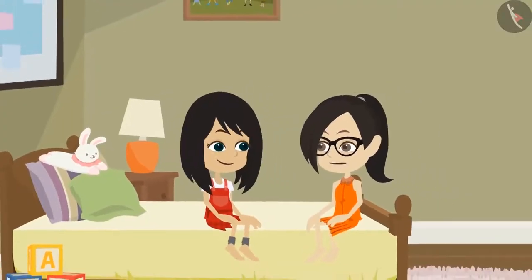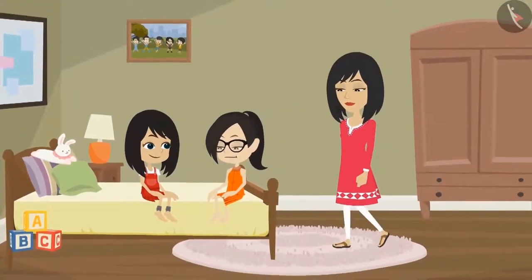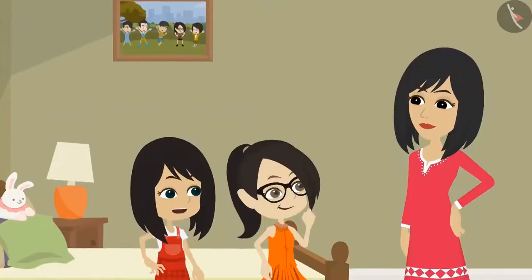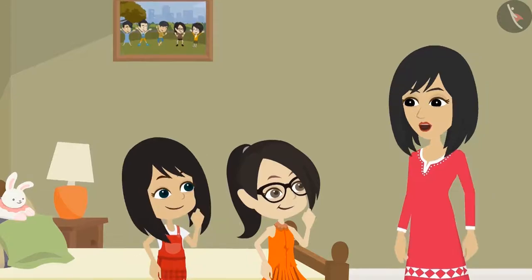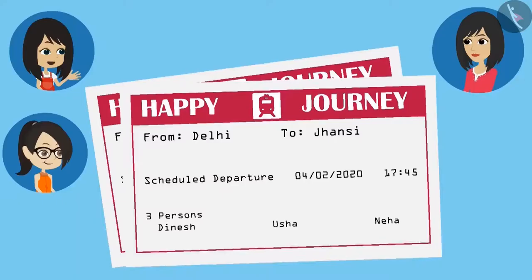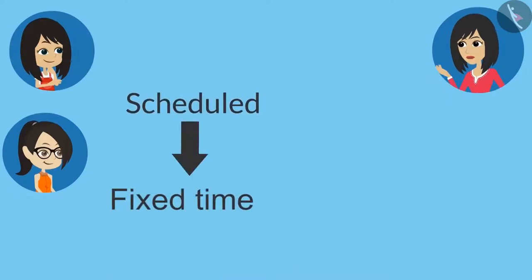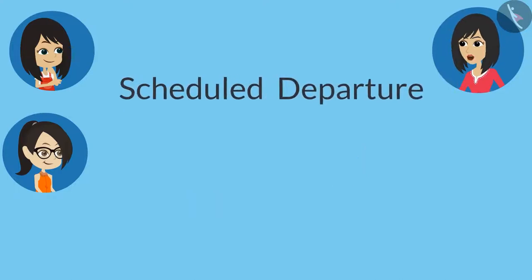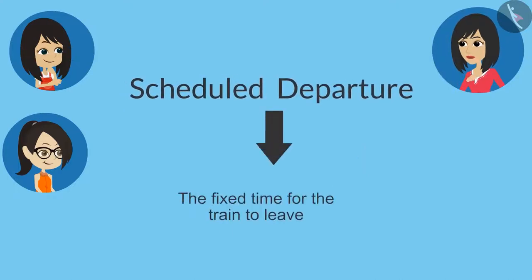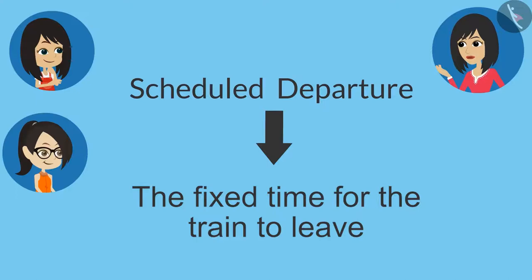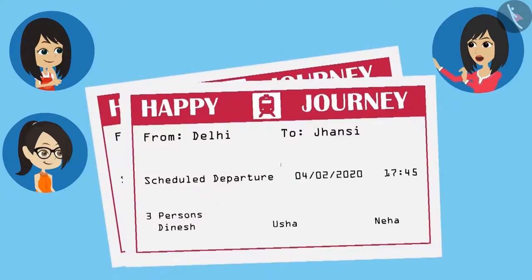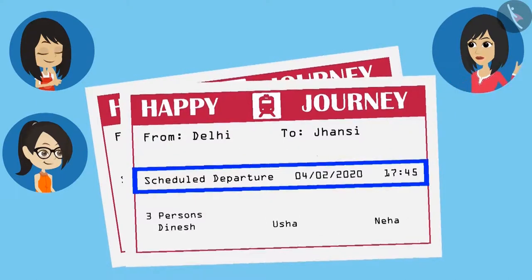Let's go and ask your mummy what is written here. Mummy, we want to ask you something. Tell me, what do you want to know? Mummy, this is our train ticket. It has 'scheduled departure' written on it — what does this mean? Scheduled means fixed time, and departure means to leave. So scheduled departure means the time fixed for the train to leave.